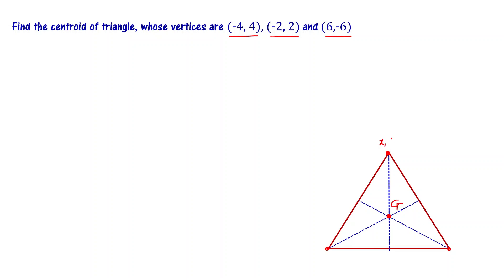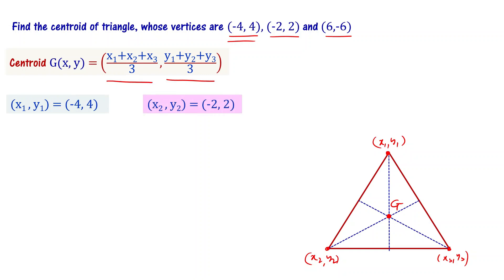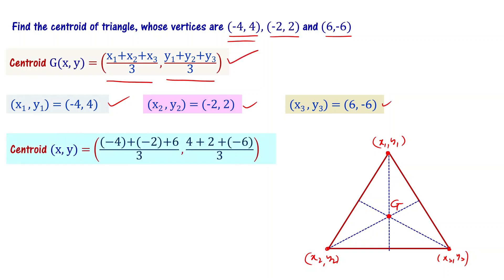If the coordinates of the vertices are given as x1 comma y1, x2 comma y2, and x3 comma y3, then the centroid formula is: x1 plus x2 plus x3 divided by 3, comma y1 plus y2 plus y3 divided by 3. Here x1 comma y1 is minus 4 comma 4, x2 comma y2 is minus 2 comma 2, and x3 comma y3 is 6 comma minus 6. Substituting these values into the formula, the centroid is x1 plus x2 plus x3 divided by 3, comma y1 plus y2 plus y3 divided by 3.